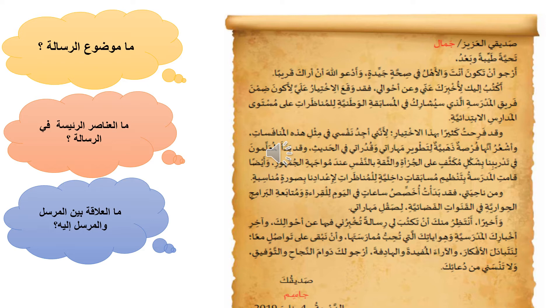امتهت الرسالة بالمقدمة والعرض والخاتمة. ولا ننسى العنصر الأخير من الرسالة وهو العنصر رقم خمسة: المرسل. من هو؟ 'صديقك جاسم' — اسمه والصفة، ثم التاريخ والمدينة التي يسكن فيها وهو يرسل لك الرسالة.